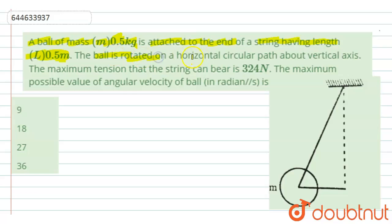The ball is rotated on a horizontal circular path about vertical axis. The maximum tension that the string can bear is 324 N. The maximum possible value of angular velocity of the ball in radians per second is - the given options are 9, 18, 27, and 36.